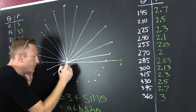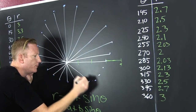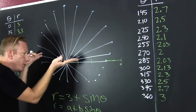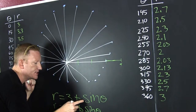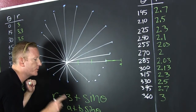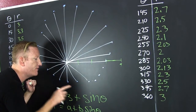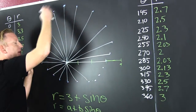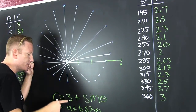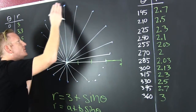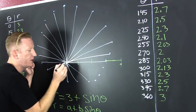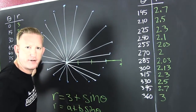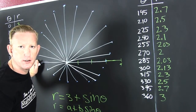When the sine is negative — when it's below the line — the sine is negative, and it's subtracting from three, and all of those values are smaller than three. When the sine is positive up here, it's adding to three, and all of these values up here are bigger than three. And that's why we see a flattening of the circle.